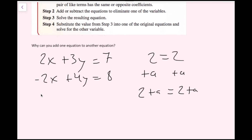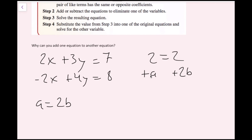Let's say a equals 2b. If I rewrote this as adding a on the left side and adding 2b on the right side — can I actually do this? Can I add a on the left side and add 2b on the right side? The answer is yes, because a and 2b are the exact same thing. So as long as I'm adding the exact same value on both sides, I can add those equations. The same goes for subtraction.